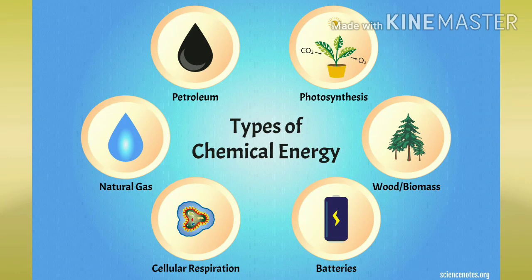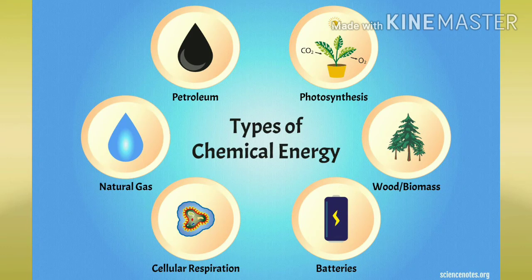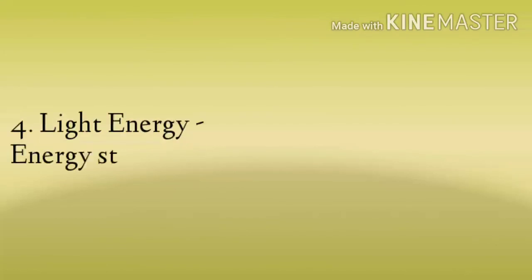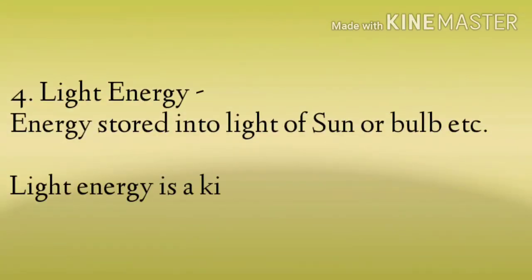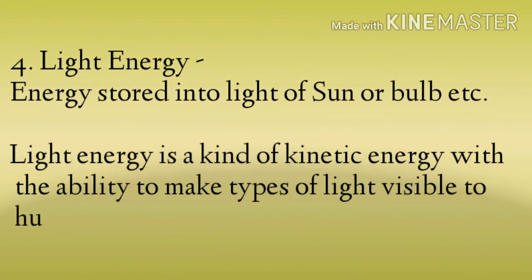Types of chemical energy में petroleum और photosynthesis आएंगे. Photosynthesis कौन सी process होती है? जिससे plants अपना खाना बनाते हैं — इसमें CO2 को absorb करते हैं और O2 को release करते हैं. तो photosynthesis की process भी chemical energy की process होती है. जैसे wood है, लकड़ियाँ हैं उनमें biomass होती है. Battery, cell, या cellular respiration — cells में जो respiration होता है, सांस लेने की जो process होती है, उनमें भी chemical energy होती है. Natural gas और petroleum में भी chemical energy होती है.